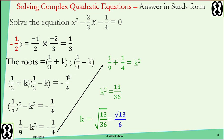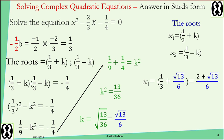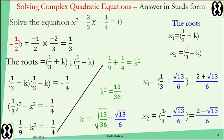You get k equals root 13 over 6, because root 36 is 6. Go back to your roots and replace k with root 13 over 6. The first root is one over three plus root 13 over 6. Working with a common denominator of 6, the second root is one over three minus root 13 over 6, which simplifies to 2 minus root 13 all over 6. Even with fraction equations, we can still use this method.